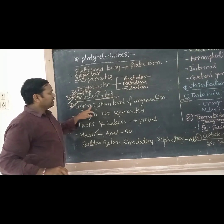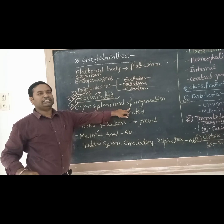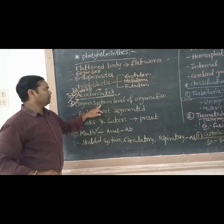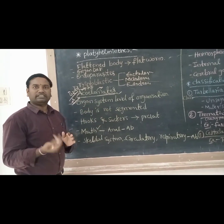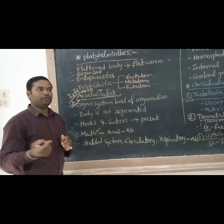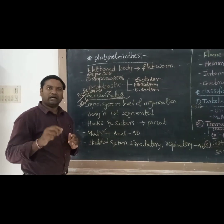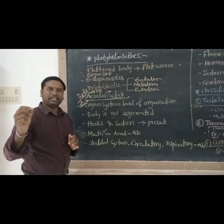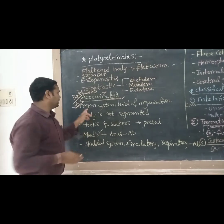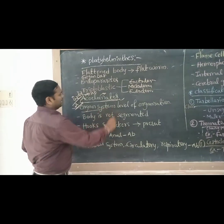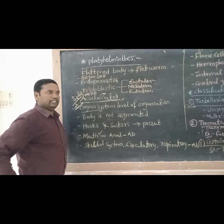There is organ system level of organization. Organ system level of organization. Cellular level of organization is Porifera. Acellular or protoplasmic level of organization is Protozoa, tissue level is next. This group — Platyhelminthes — is organ system level of organization.